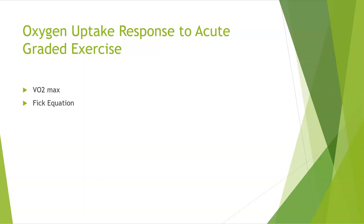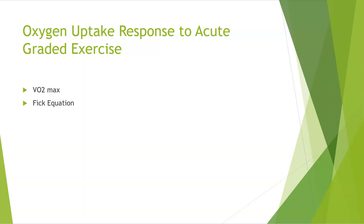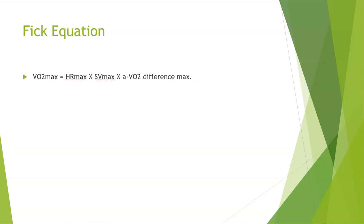Next, we'll look at oxygen uptake response to acute graded exercise, including VO2 max and the Fick equation. VO2 max is defined as the highest volume of oxygen that the body can consume. It is used as an indicator of aerobic fitness and endurance exercise performance, because a higher VO2 max indicates a greater capacity to create ATP via the oxidative energy system. The Fick equation is: VO2 max = heart rate max × stroke volume max × arteriovenous O2 difference max.